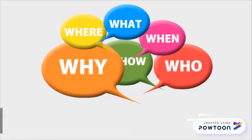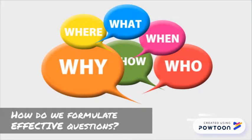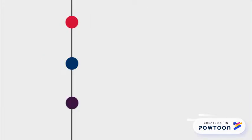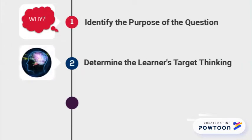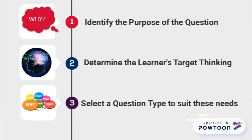So let's talk about how we formulate effective questions. We can think of this as a three-step process. The first is to ask ourselves, why do I want to ask this question? Then we need to determine what kind of thinking we want to stimulate on the part of the learner, and that will help us select the type of question that will suit these needs.